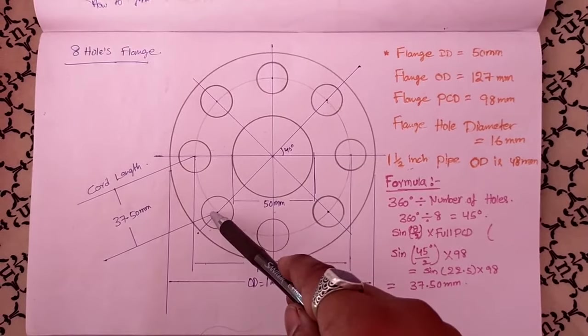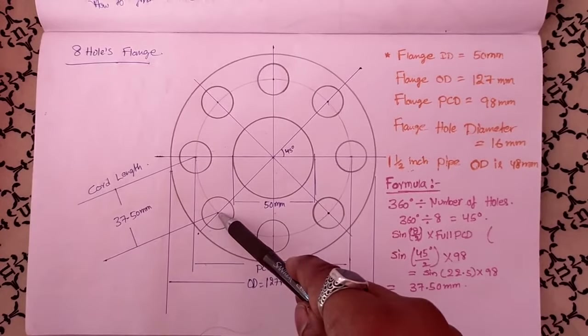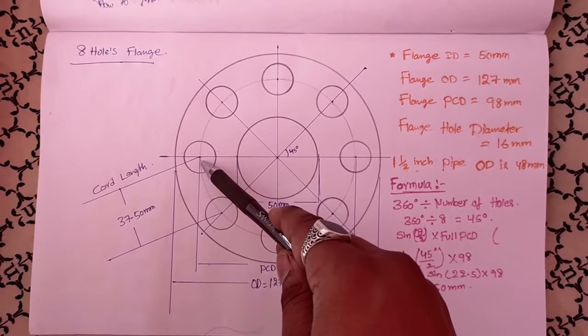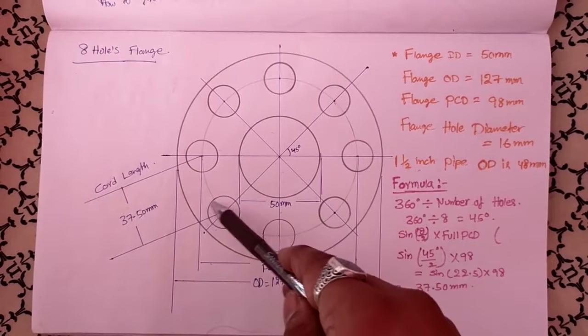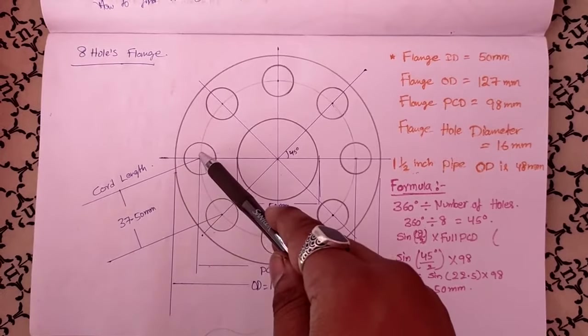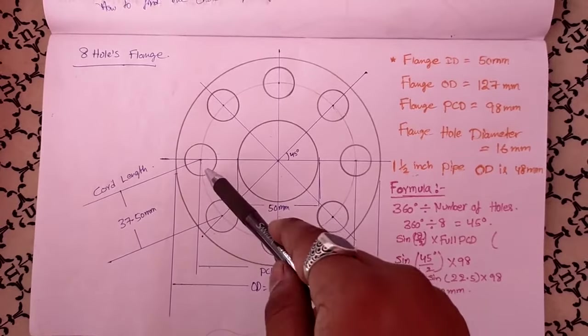From this center point to this center point, this distance is called the cord length — the hole-to-hole center distance.